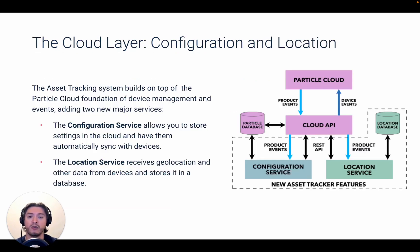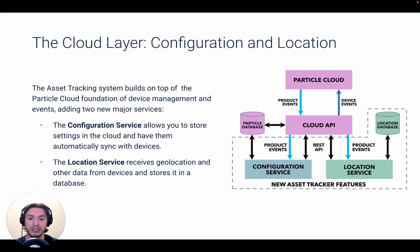Lastly, let's go over the cloud layer. The asset tracking system adds two new services on top of the device management platform in our console: the configuration service, used to store various fleet settings like publishing frequency and geofencing, and the location service that receives and stores geolocation data as well as any additional sensor data your devices are sending. One important thing to call out is that unlike with our traditional connectivity stack, we do store location information in a database for historical route purposes. This data is encrypted at rest in a separate database to ensure privacy shield and GDPR compliance.